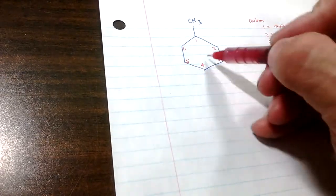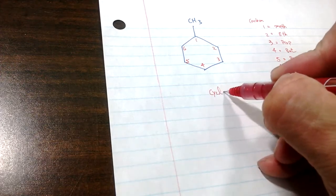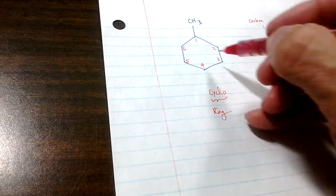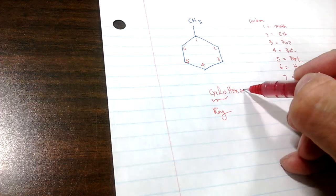So, six carbon in the ring, so it should be in the ring cycle. C-Y-C-L, cycle is ring. Ring, six carbon, so it should be hex, H-E-X, A-N-E.